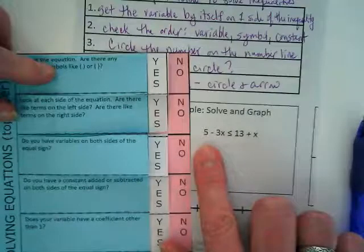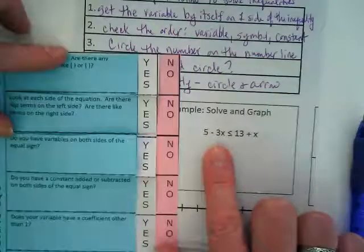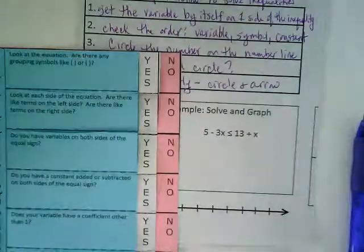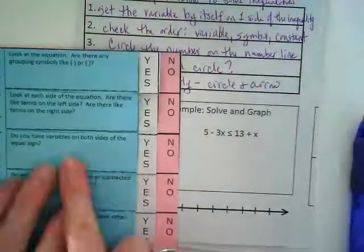Look at each side of the equation. Are there like terms on the left side? Are there like terms on the right side? The like terms are there, they're just on the opposite sides of the inequality. That's step three, yes.